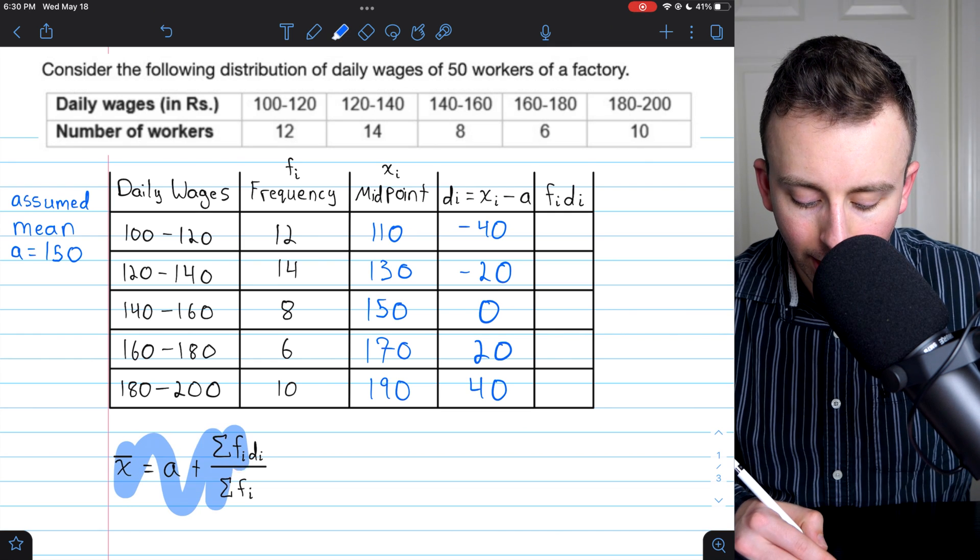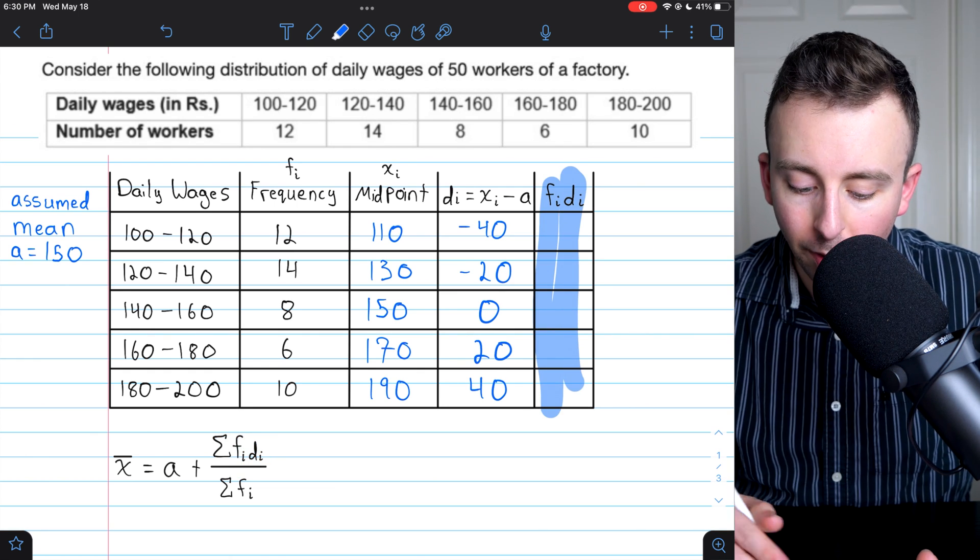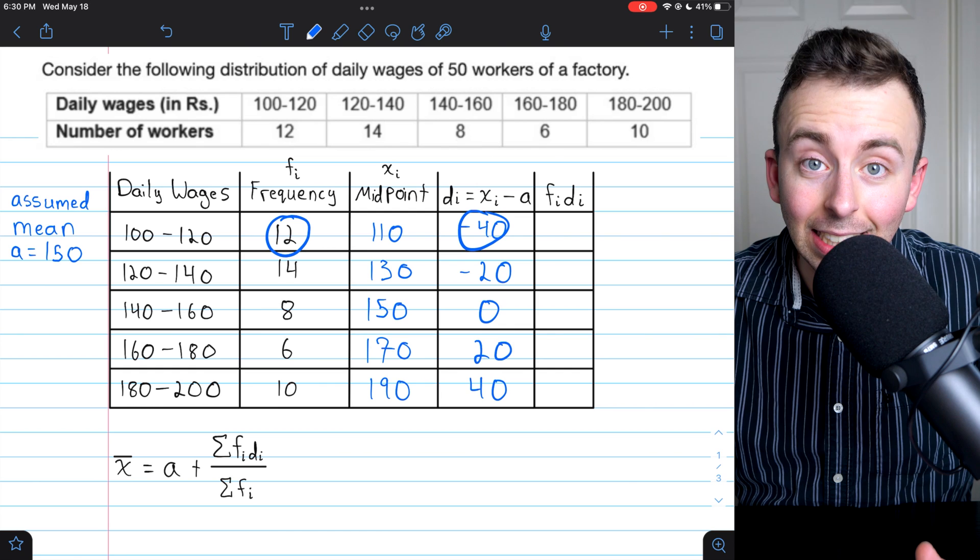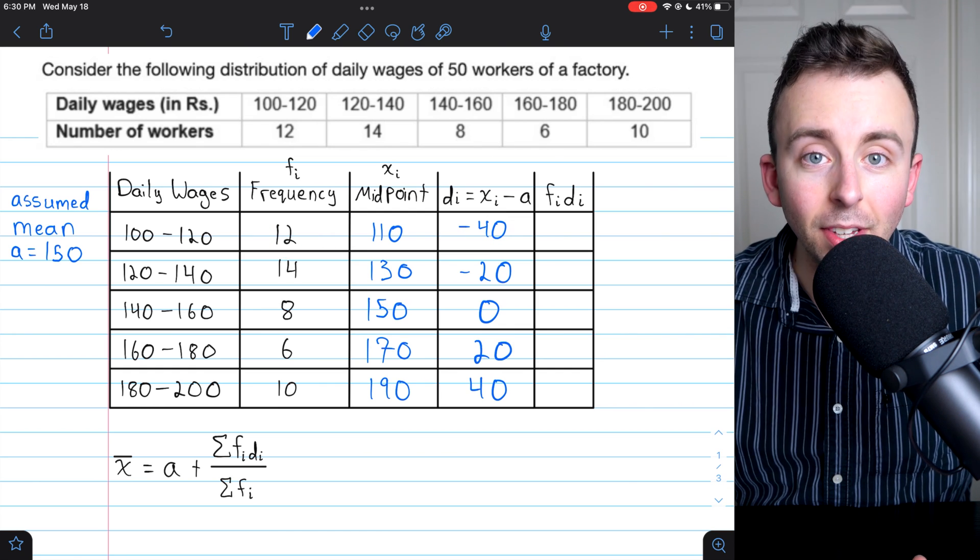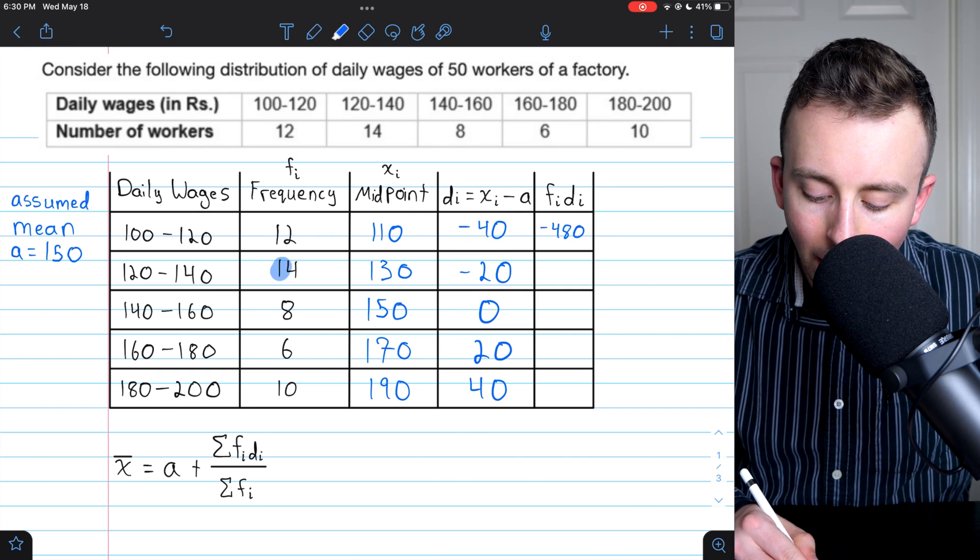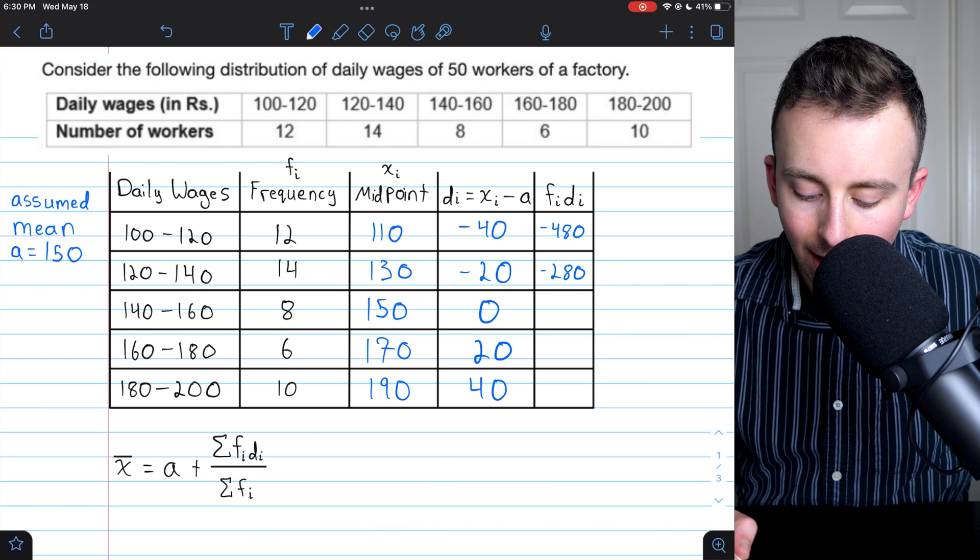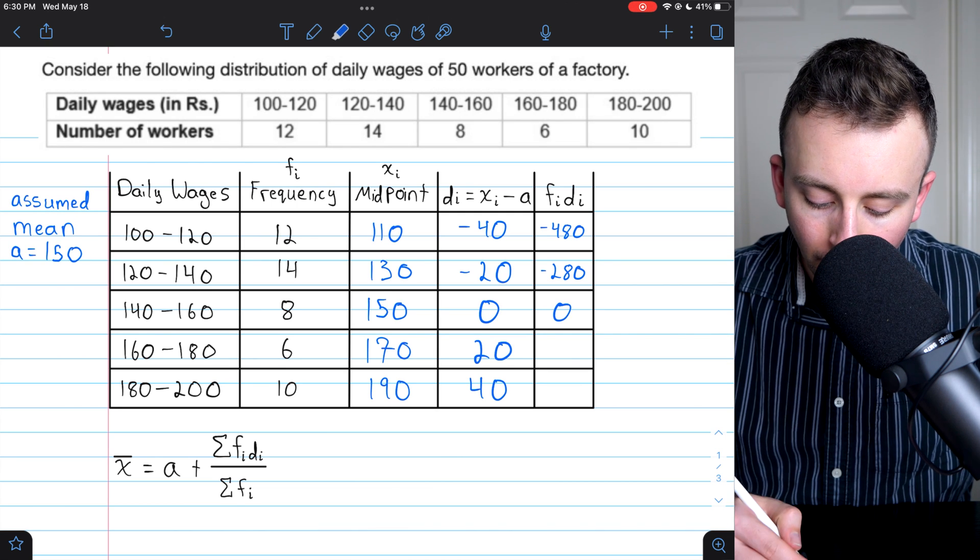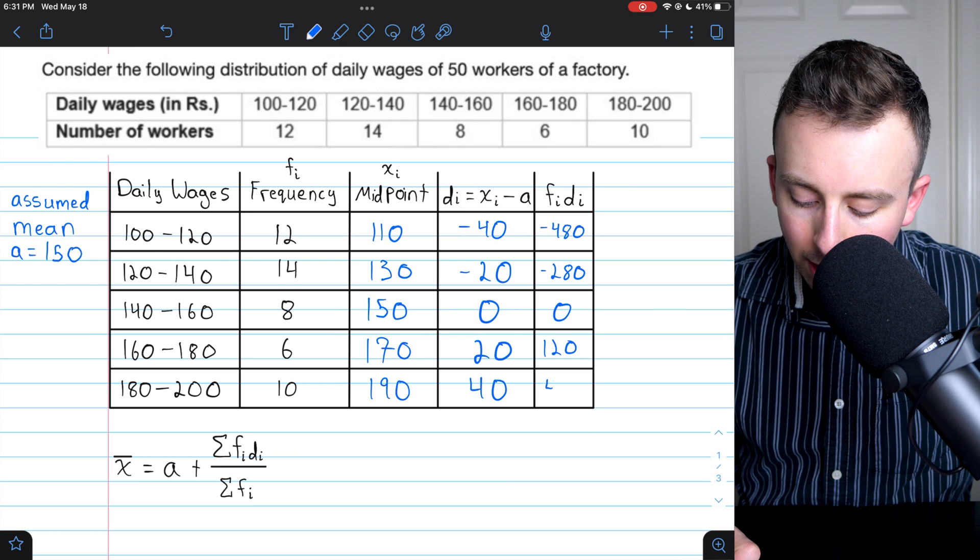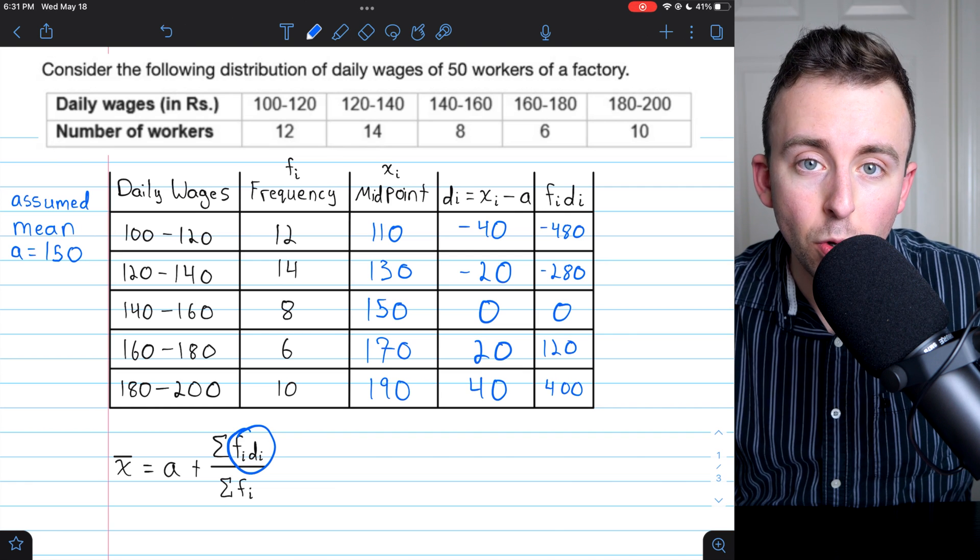We're almost done. Remember, here in the formula, we'll have to sum up all the products fi times di. And that's what we're going to fill out here in the final column. We need to take each frequency and multiply it by these di differences. So let's do that. First, we have 12 times negative 40. And that's going to be negative 480. Then we have 14 times negative 20. That's going to be negative 280. Then 8 times 0 is 0. Then we have 6 times 20, which is 120. And then we have 10 times 40, which is 400. So those are all the products, fi times di. We'll need to add these up to use in the formula.